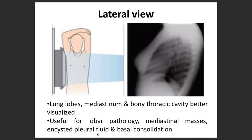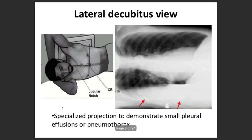For the lateral view — L for lateral — you can see lung lobes, mediastinum, and the bony thoracic cavity much better. Lateral views are important for detecting fluid in the lungs, basal consolidation, and pacemaker positioning. There is also the lateral decubitus view, which is used when you want to detect a very small pleural effusion or pneumothorax, allowing you to distinguish them.